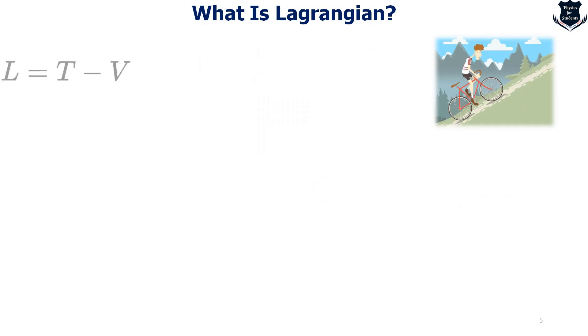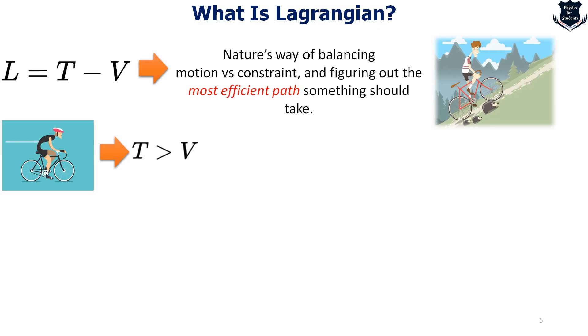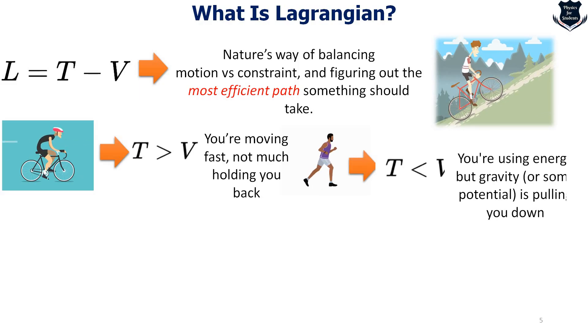If I take again L equals T minus V, it is actually telling that nature's way of balancing motion versus constraint. It can be various other constraint factors and figuring out which is the most efficient path someone should take. If your T is greater than V, that means kinetic energy is more than potential energy - you are moving fast, nothing is holding you back. But here you can see a runner where the kinetic energy is less than potential energy. This is pulling you down, so that is why T is less than V.